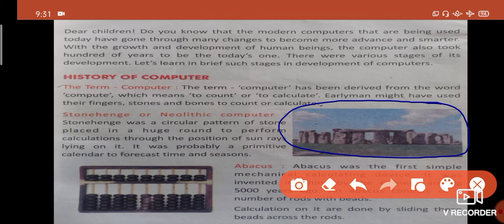This is the circular pattern. As the sun rays fall at different positions, it was used to estimate time. You can see this at Jantar Mantar in Delhi, Jaipur, Mathura. If you visit these places, you can see it practically there.